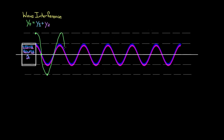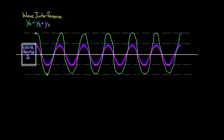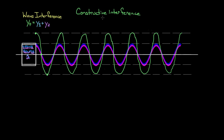We say these waves are constructively interfering. We call this constructive interference, because the two waves combined to construct a wave that was twice as big as the original waves. When two waves combine and form a wave bigger than before, we call it constructive interference. Because these two waves combined perfectly, sometimes you'll hear this called perfectly constructive or totally constructive interference. You can imagine cases where they don't line up exactly but you still get a bigger wave — that's still constructive, just not totally constructive.